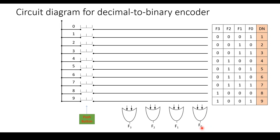Start from the right and number the outputs 0 to 3 — 4 total. For decimal value 0, the binary equivalent is 0, so no input lines are drawn for the first line. For decimal value 1, the binary equivalent is 0001, so F0 gets 1 and F3, F2, F1 get 0. Therefore, one input line is drawn connecting to F0.